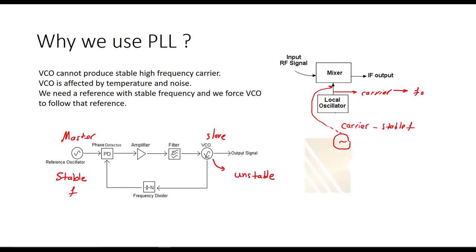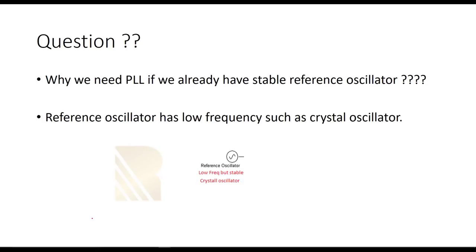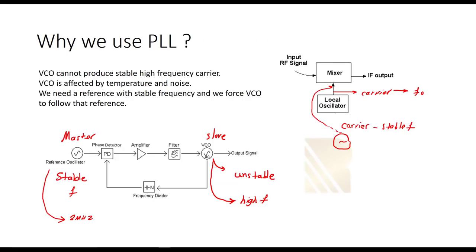The answer is that the reference oscillator has a low frequency — such as a crystal oscillator. With VCO we are able to produce a high-frequency carrier, but it's unstable. With a reference oscillator we can produce a stable frequency, but the problem is we can't produce high frequency — maybe something like 2 MHz from a crystal oscillator. Crystal oscillators are very good oscillators but they have low frequency. That's why we must use VCO as the main source to produce the carrier. We use the reference oscillator as a reference and control the VCO with a feedback system in order to stabilize the output.